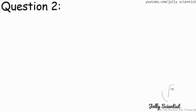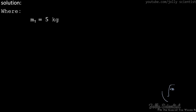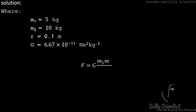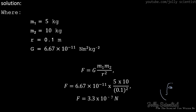Question 2: Determine the force of attraction between a body of mass 5 kg and another mass of 10 kg placed 10 cm away from each other. Solution: M1 is 5 kg, M2 is 10 kg, and the distance R is 0.1 meters. Substituting the values into the formula, F equals 3.3 times 10 to the power of negative 7 N.